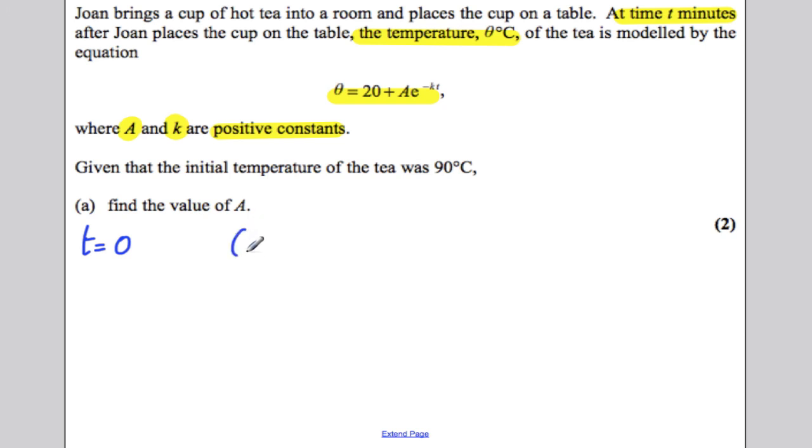So we substitute into this, theta is therefore equal to 20 plus the initial temperature was actually, sorry, when t is zero, the initial temperature theta was also 90, so let's substitute 90 in as well. 90 is equal to 20 plus A times e to the negative K times zero.